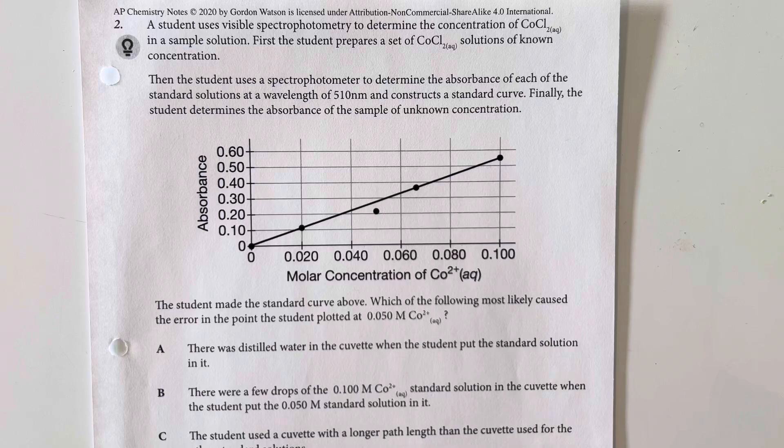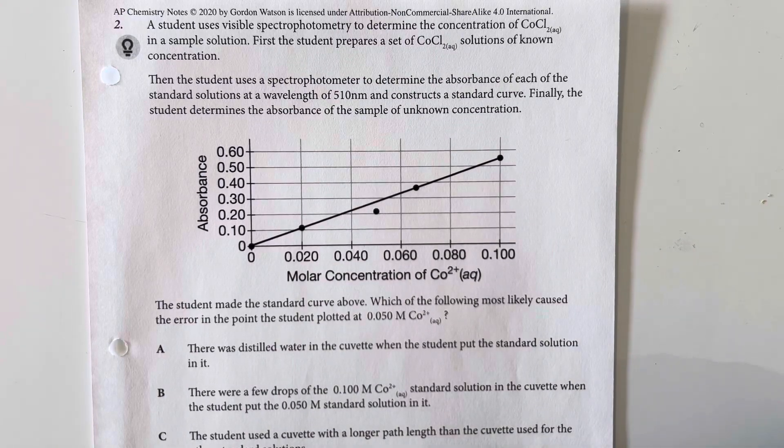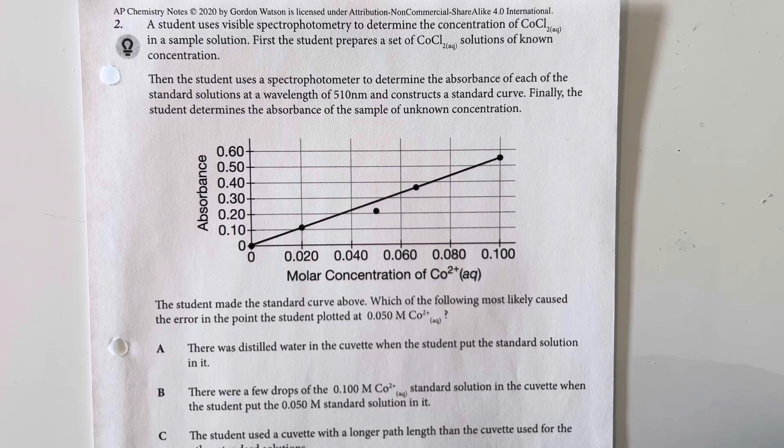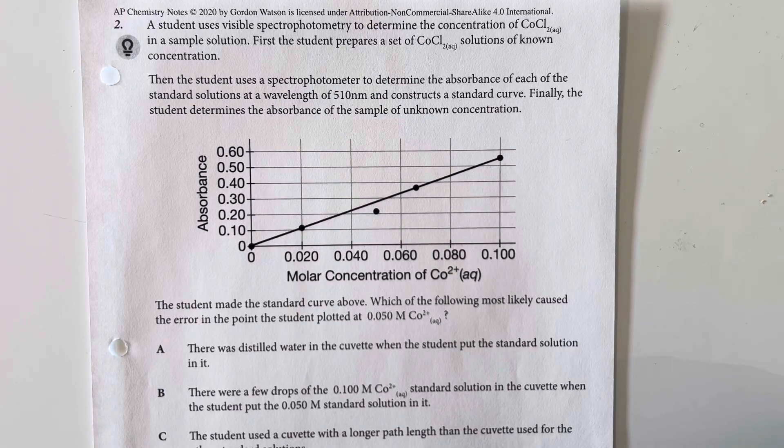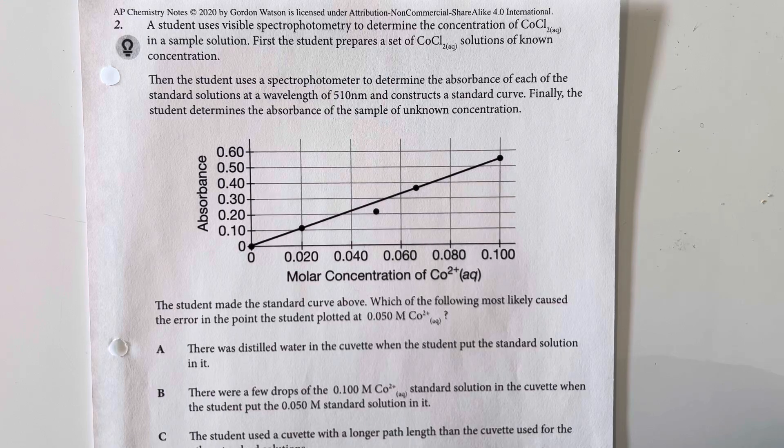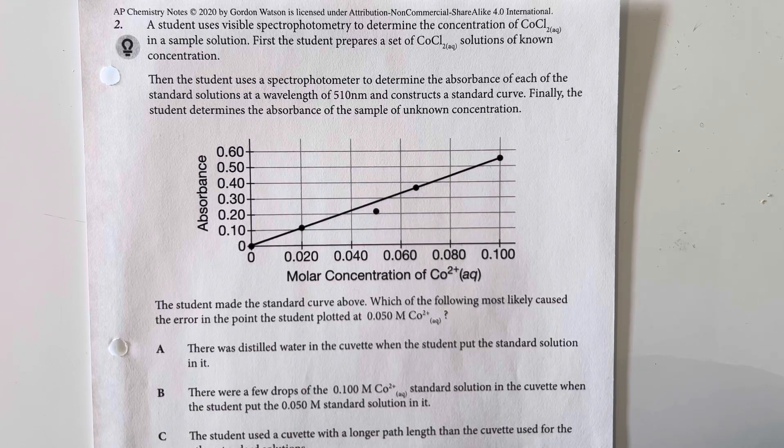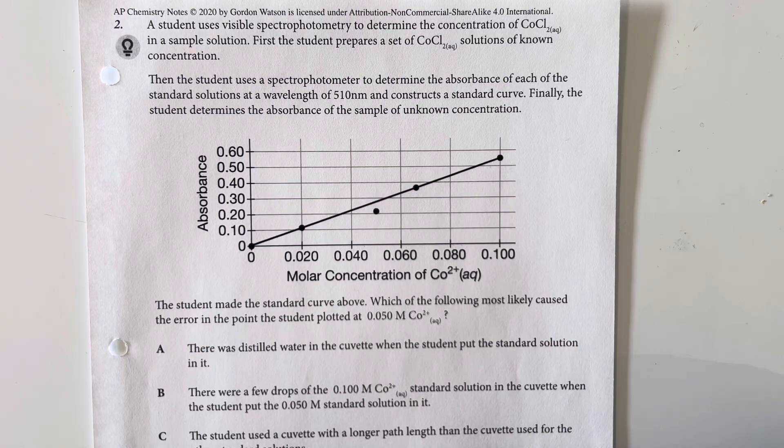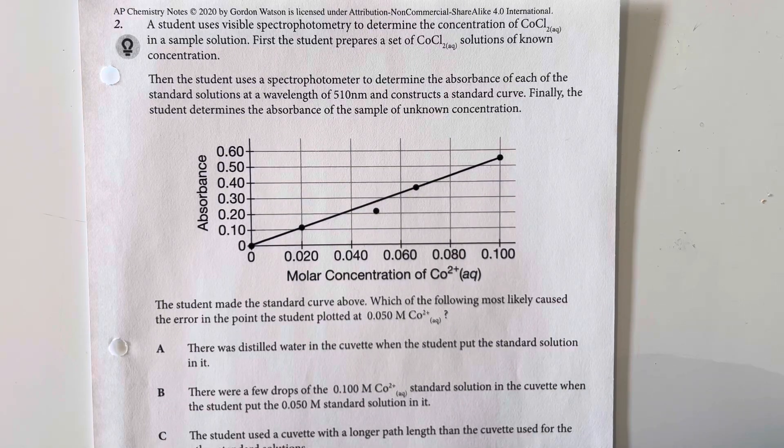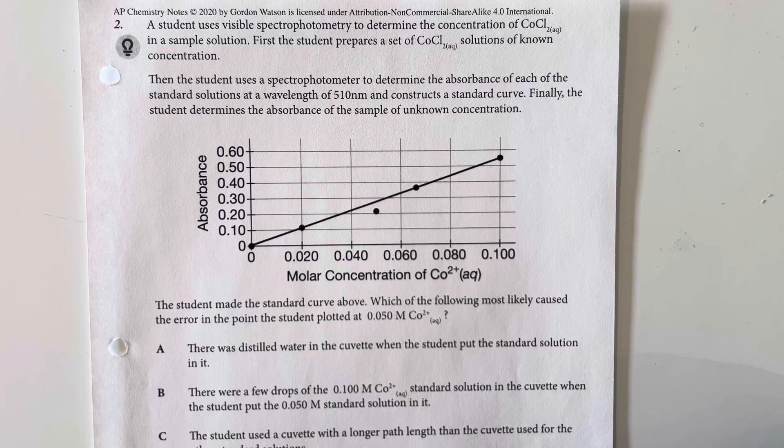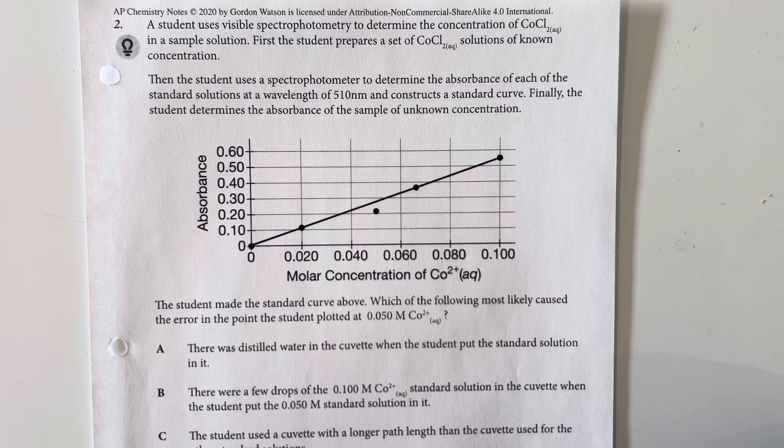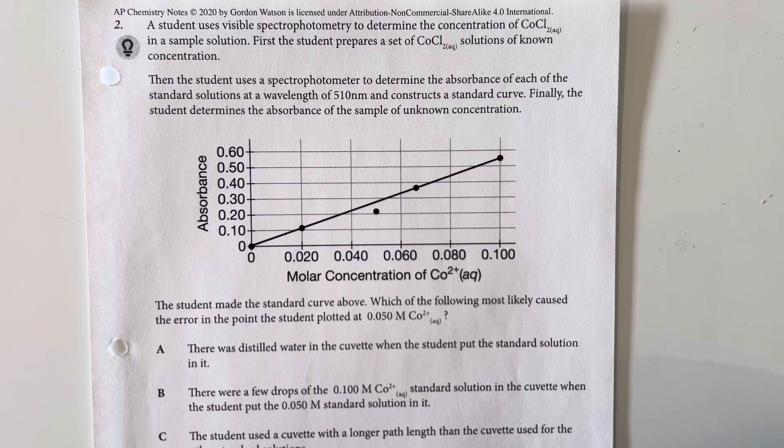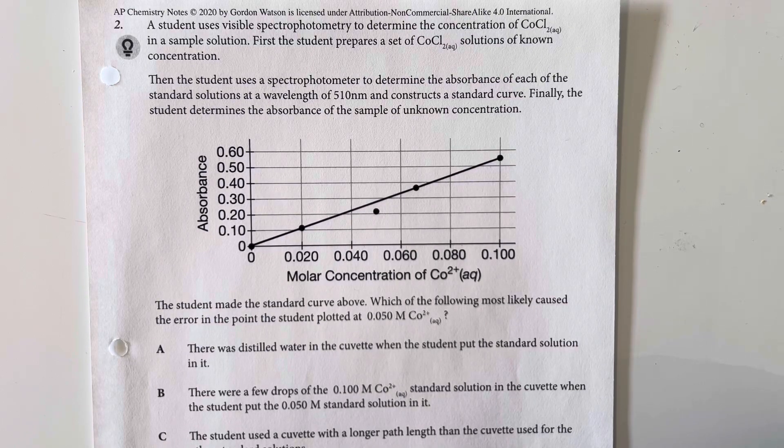A student uses visible spectrophotometry to determine the concentration of cobalt 2 chloride in a sample solution. First the student prepares a set of cobalt 2 chloride solutions of known concentration. Then the student uses a spectrophotometer to determine the absorbance at each of the standard solutions at a wavelength of 510 nanometers and constructs a standard curve. Finally, the student determines the absorbance of the sample of unknown concentration.